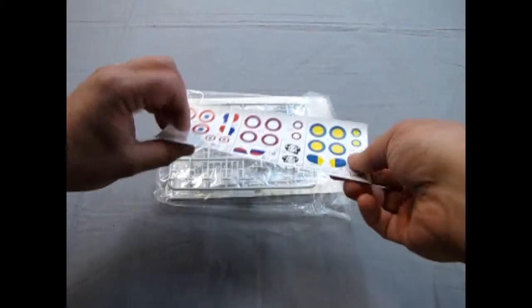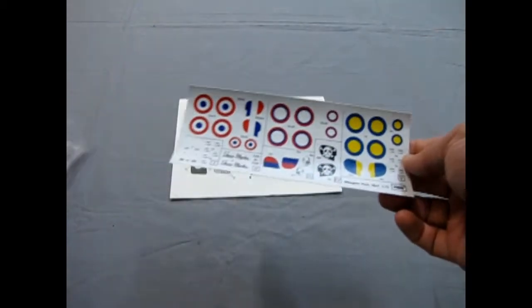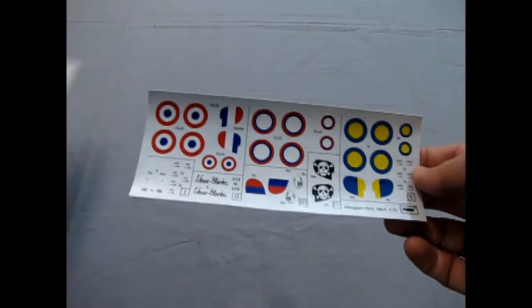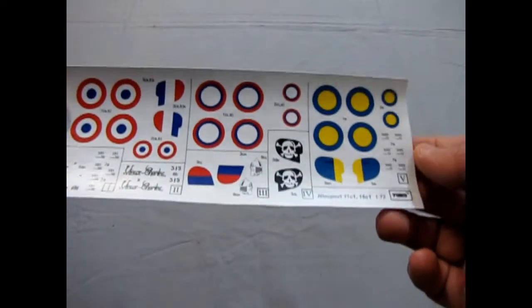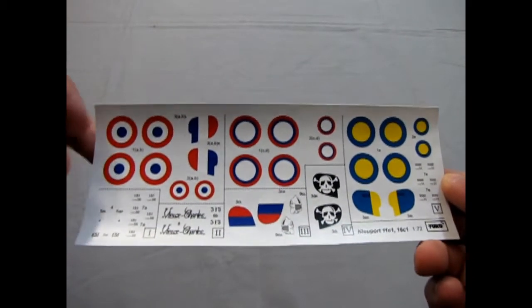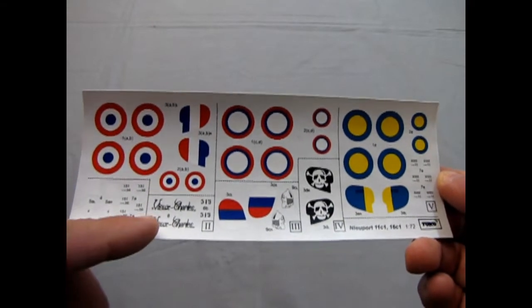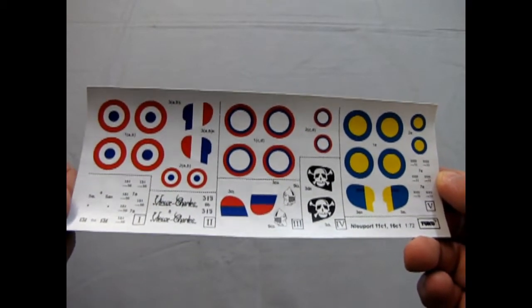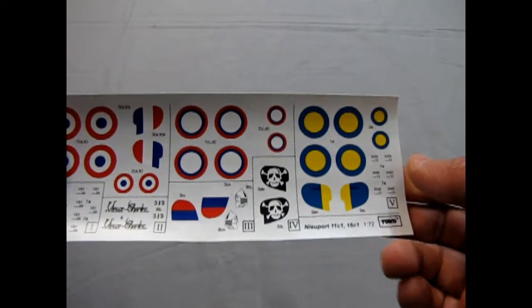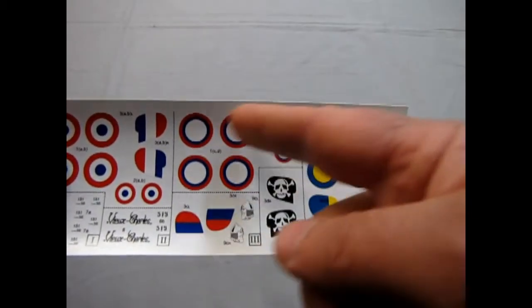Now, speaking of decals to start with, which is a change, I usually look at the instructions first. But here we have the French Newport by Avie Charles, the old one. And there's the markings here for the Russian one.